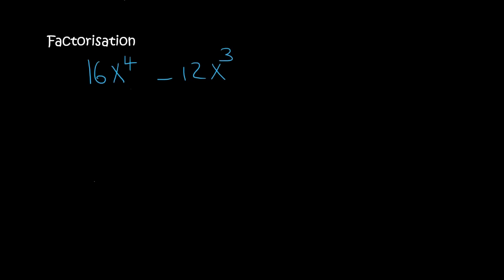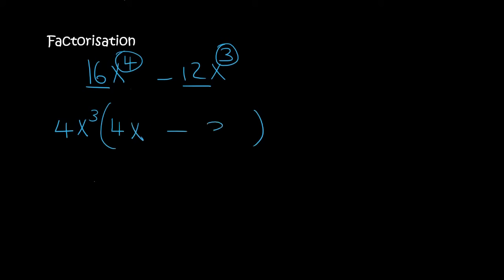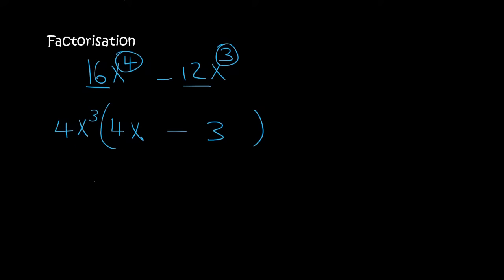If you want, you can pause the video and try this yourself. For 16x⁴ minus 12x³: the largest factor that 16 and 12 both have is 4. This one has three x's in common with the other which has four, so they at least have three x's in common. What's left over? There will be a 4 and an x left in the first term, and then minus 3 in the second. If I multiply this back, you get 16x⁴ minus 12x³. So the answer is 4x³(4x minus 3).